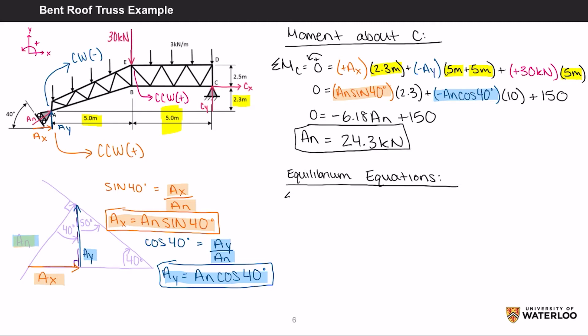The net force in the x direction equals zero in equilibrium, which equals AX plus CX. Substituting in AX for AN sine 40, as well as remembering that AN is equal to 24.3 kilonewtons, you then get CX equals negative 15.6 kilonewtons. Remember that the negative just means we assumed the wrong direction of the force.